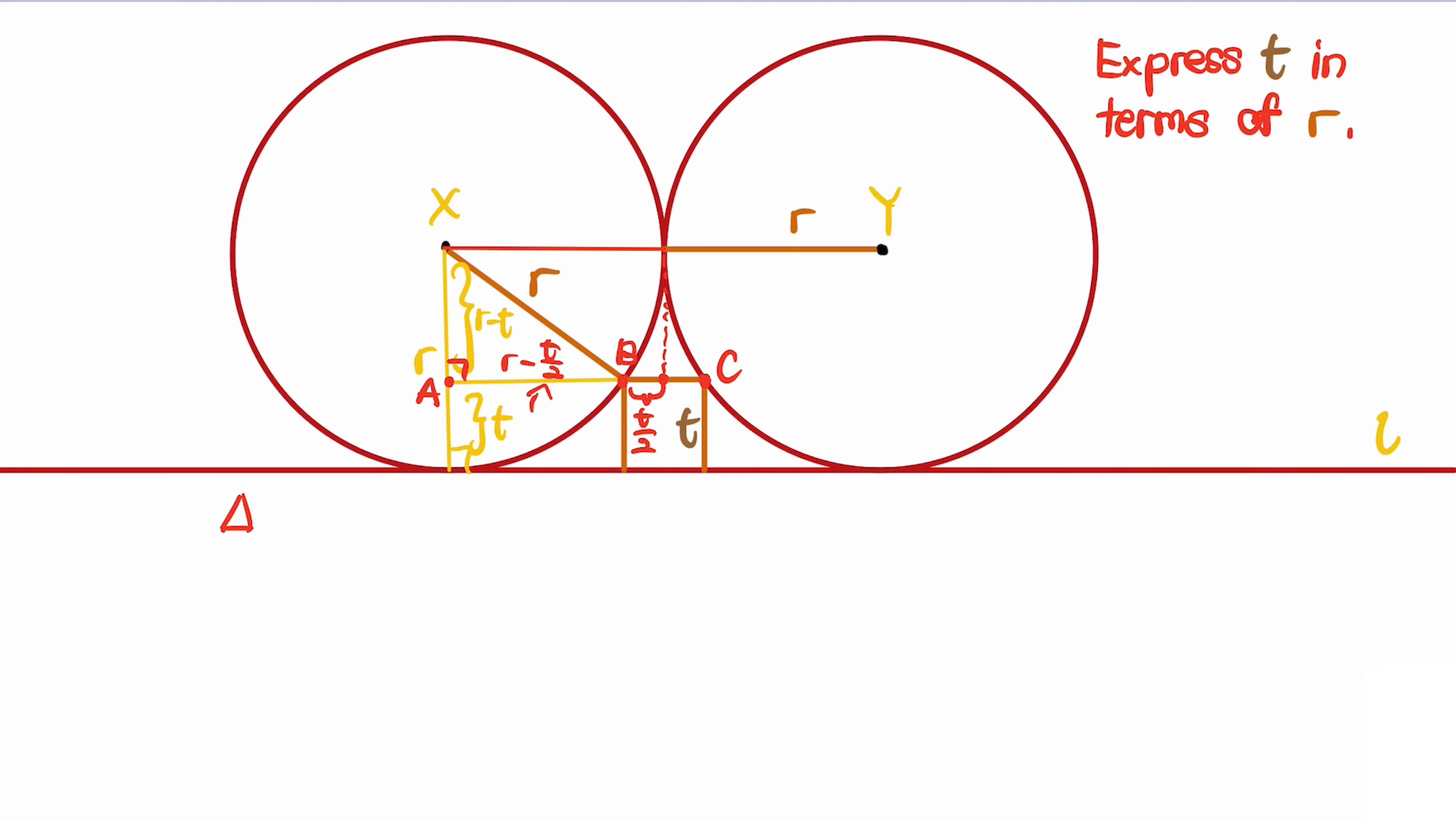You can see that triangle AXB is a right-angled triangle.